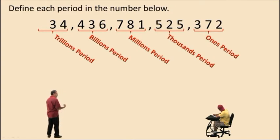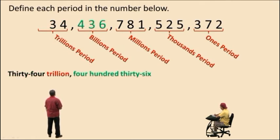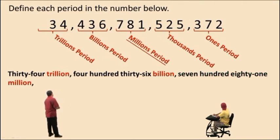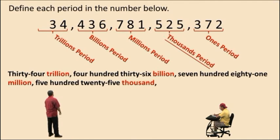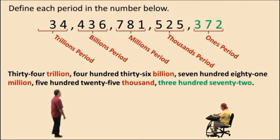All right, Charlie, so now that we know the periods, we can read the number correctly. And here we go. Thirty-four trillion, four hundred thirty-six billion, seven hundred eighty-one million, five hundred twenty-five thousand three hundred seventy-two. Notice we do not use the word and. We will use the word and when we start connecting decimals or fractional parts to our whole numbers.